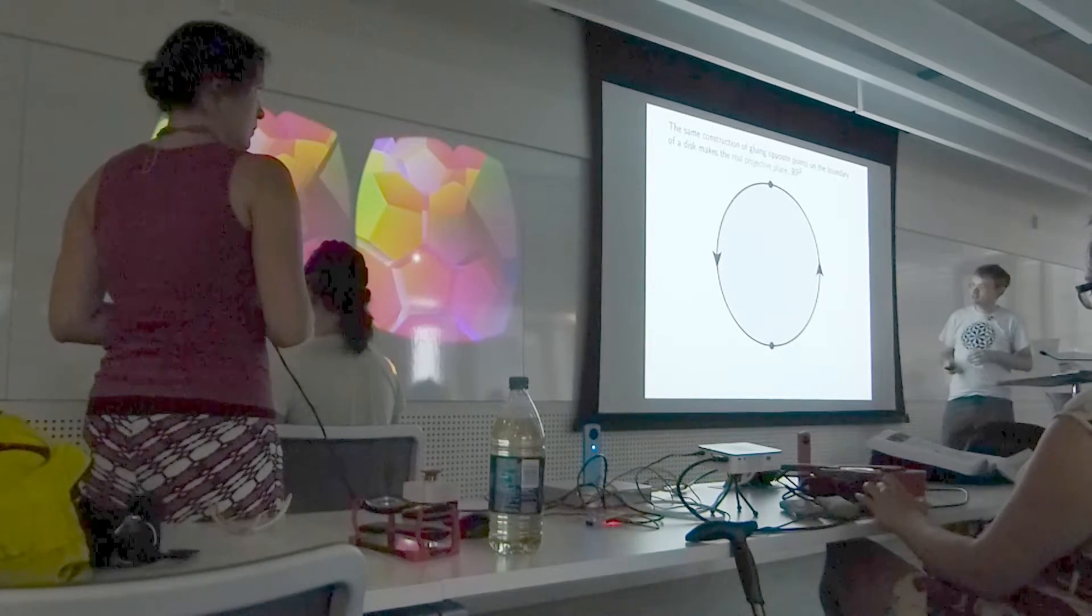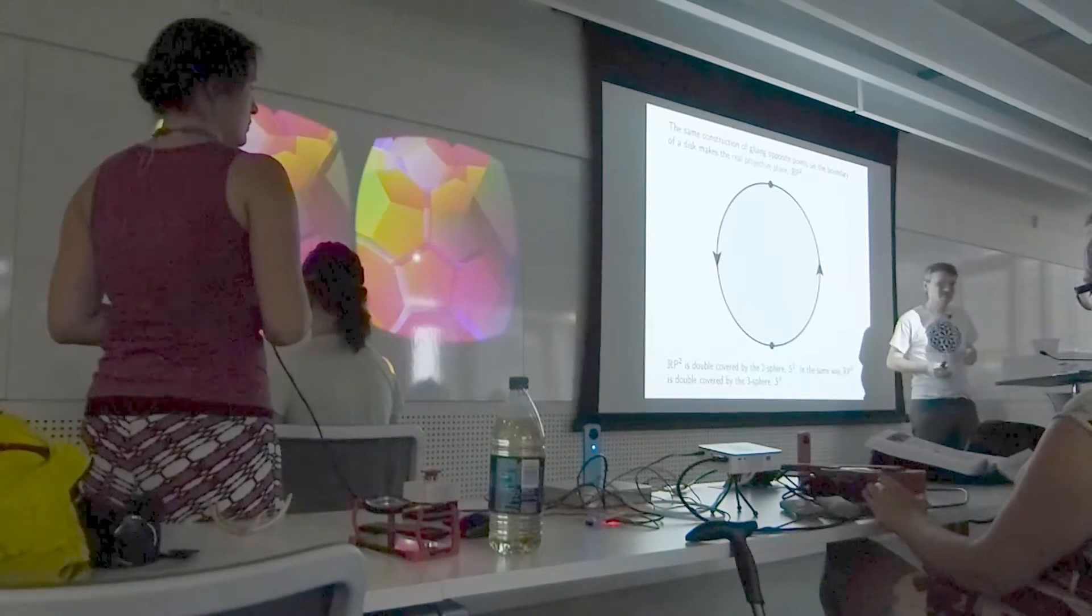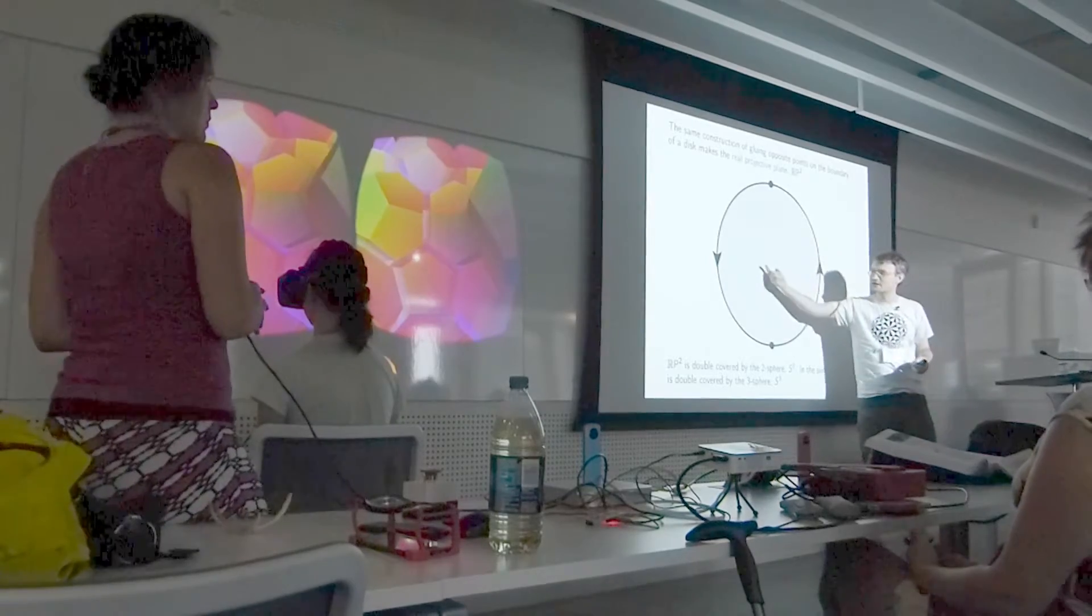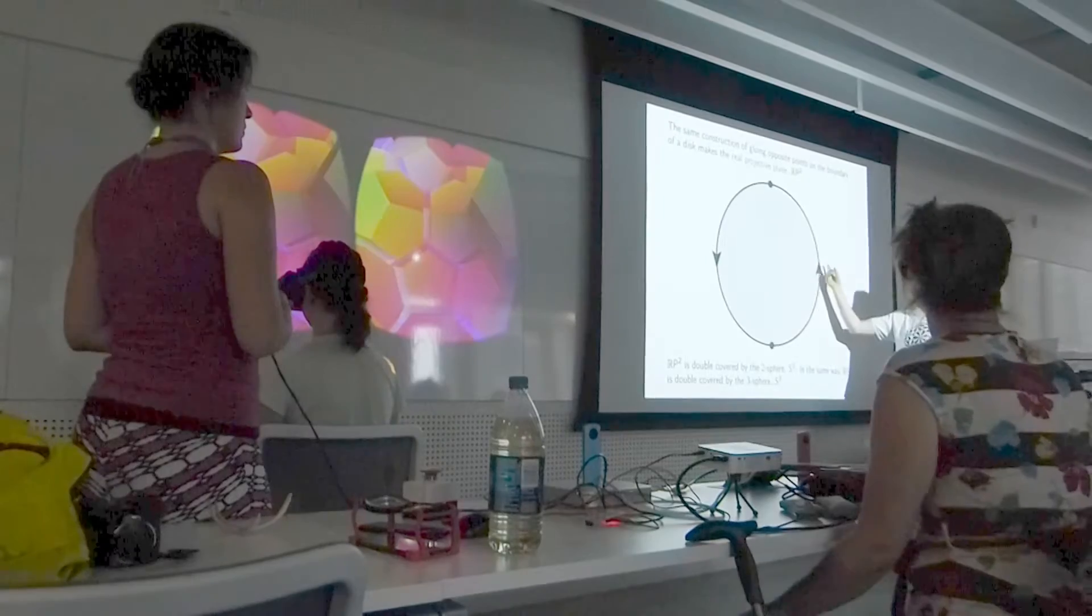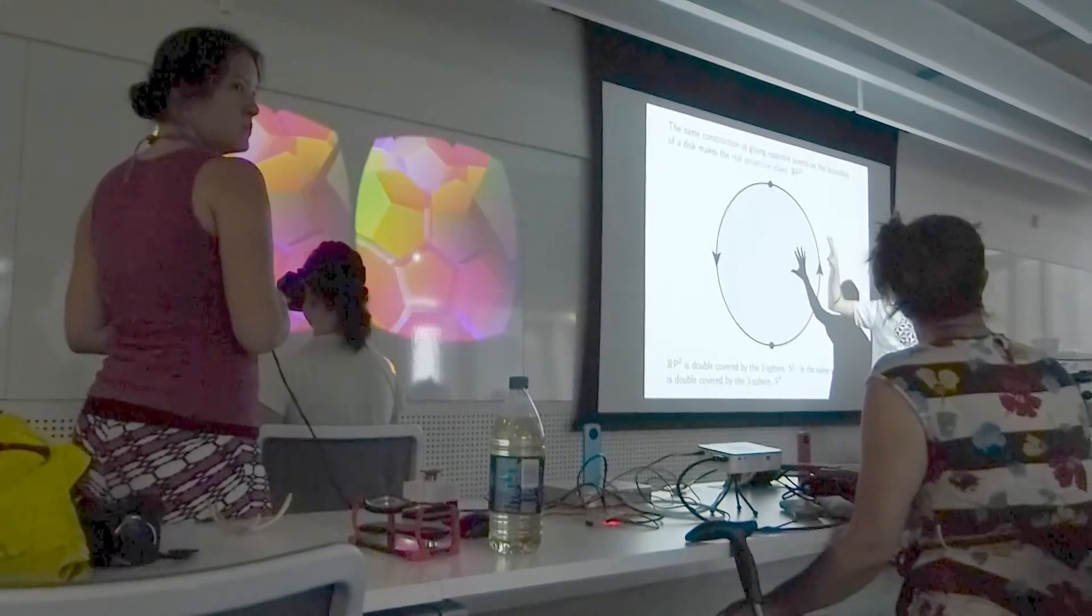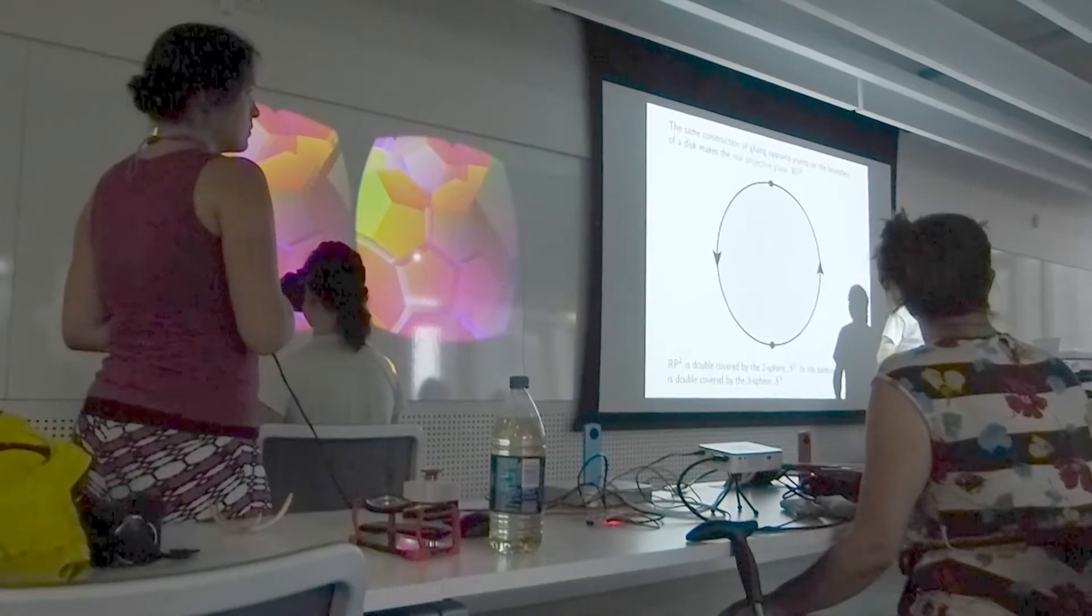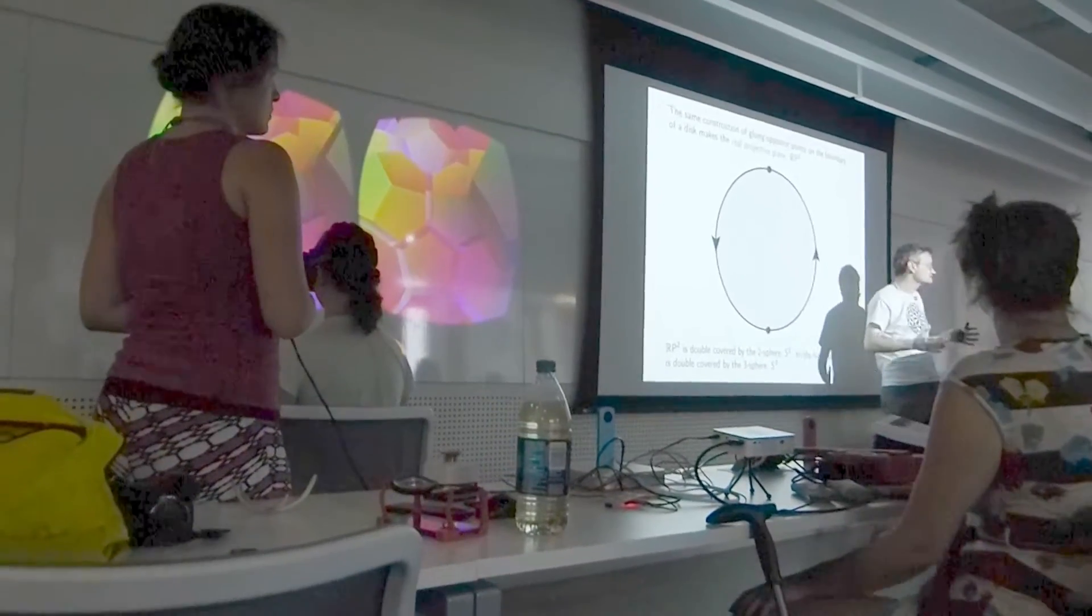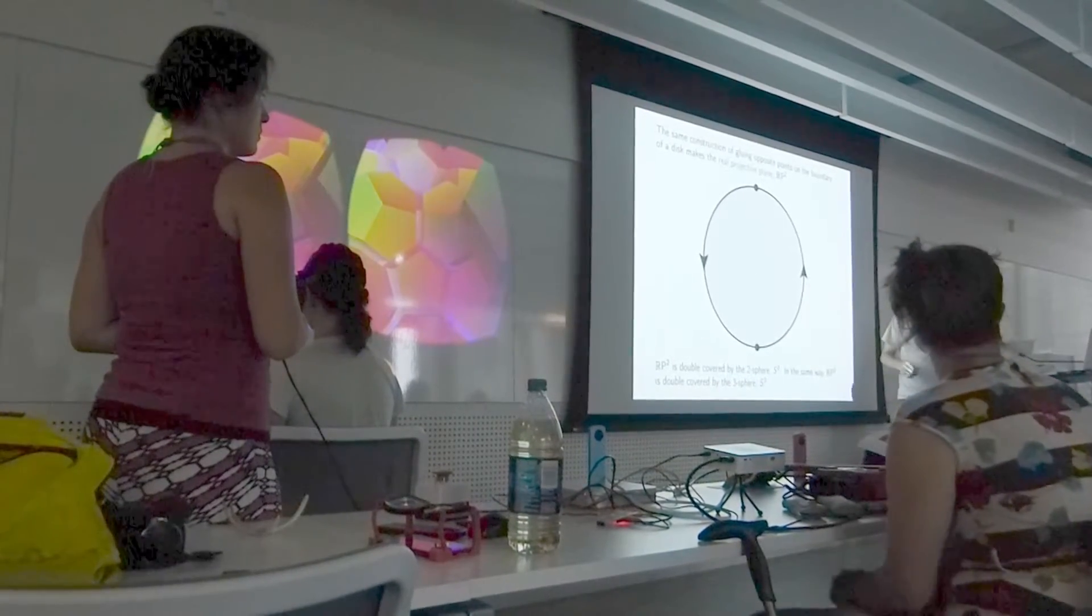RP2 has the property that it's double-covered by the 2-sphere. You can think of two copies of this RP2, and when I come off this edge, instead of getting glued up here, I go on to a different copy of the same thing. These two copies of RP2, when you glue them correctly, give you the ordinary sphere in 3D space, which as a topologist I would call S2, because it's a surface, a 2D object.